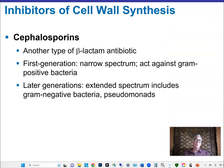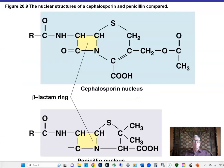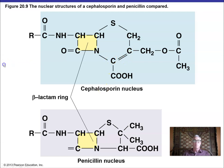Cephalosporins are another type of beta-lactam antibiotic. Initially pretty narrow spectrum, there have been about five generations of cephalosporins developed, with later generations now able to conquer gram-negative bacteria and pseudomonads. A cephalosporin has a very different ring next to the beta-lactam ring — the cephalosporin nucleus — giving it different properties.